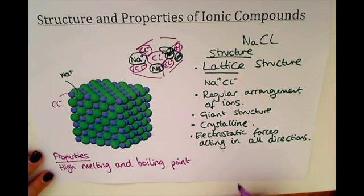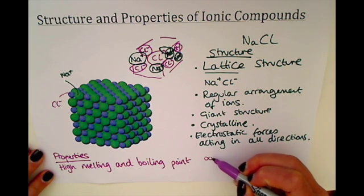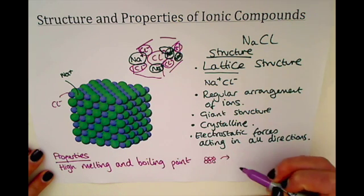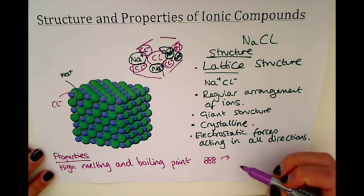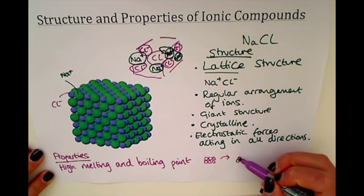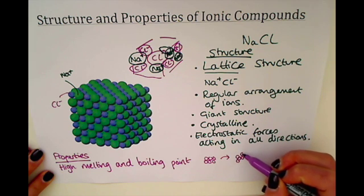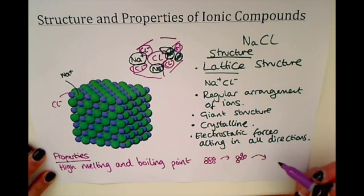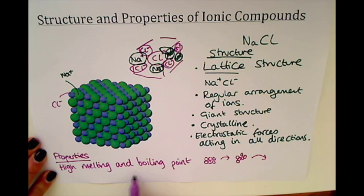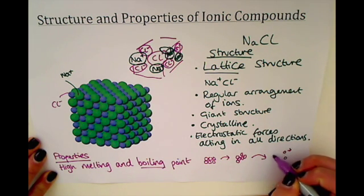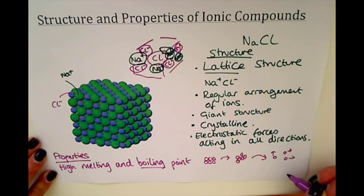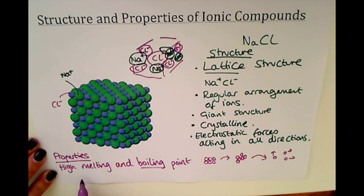You need a lot of energy put in to make this solid structure a liquid and then a gas. So at the moment it's solid — you'd have to input a lot of energy to break those ionic bonds because of the electrostatic forces holding them together to make it into a liquid. And furthermore, you would need even more energy, therefore a really high boiling point to turn it into a gas, with the gas particles travelling in all directions randomly with loads of energy. So a high melting and boiling point for these ionic compounds.